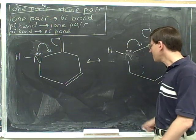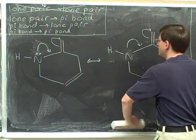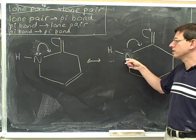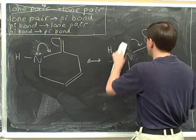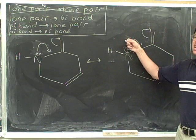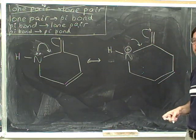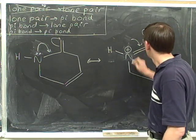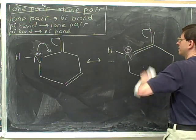Now we look at the initial tail — it's coming from the lone pair, so we erase the lone pair. It's an initial tail, so we have to change the charge. This nitrogen started neutral and it lost electrons, so it ends up with a positive formal charge. Now we can erase that tail because we've dealt with it. Now we look at this head, which indicates the formation of a pi bond — we draw that pi bond. We're in the middle of the string of arrows, so we don't change any charges. We just erase the head.